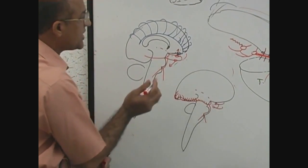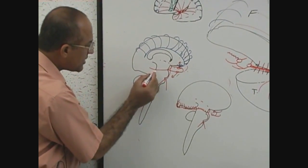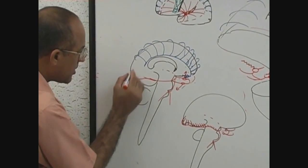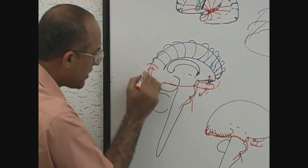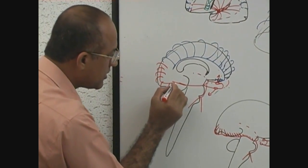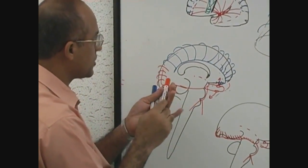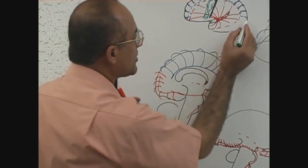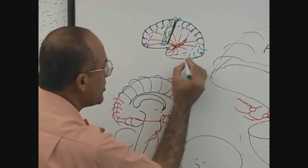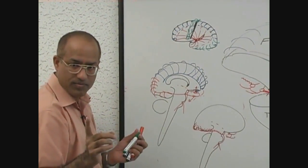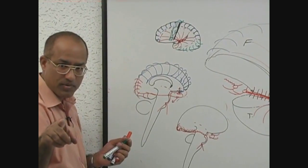This is on the medial side. So medial side, if I draw the posterior cerebral, this is the supply from the posterior cerebral. Now on this diagram, if I make posterior cerebral green, then this is the area supplied by posterior cerebral. Is that right? You are not clear about it?